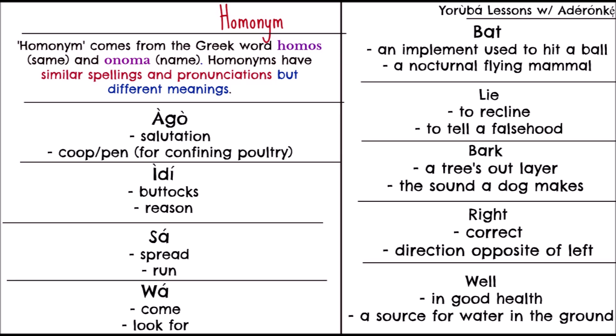Eedi is another one — it could be buttocks or reason. Sa: in Nigeria, washing machines are a little more scarce than in America, so you typically wash your clothes by hand and spread them outside — 'sa' could mean spread. It could also mean run, or come — like when you signal to someone. If you're looking for something, 'sa' can also mean look for.